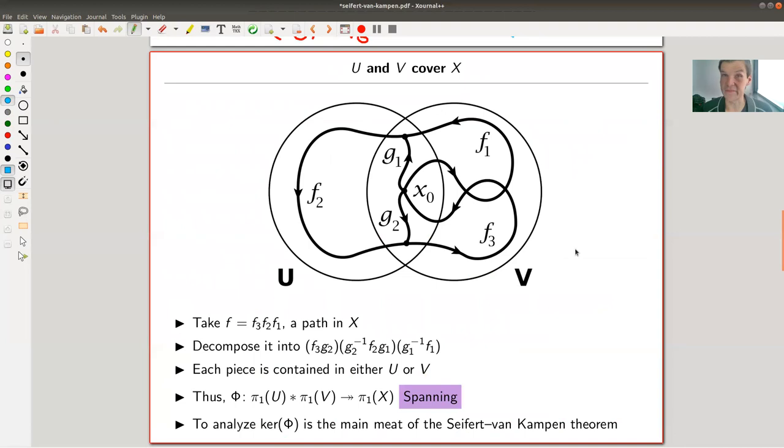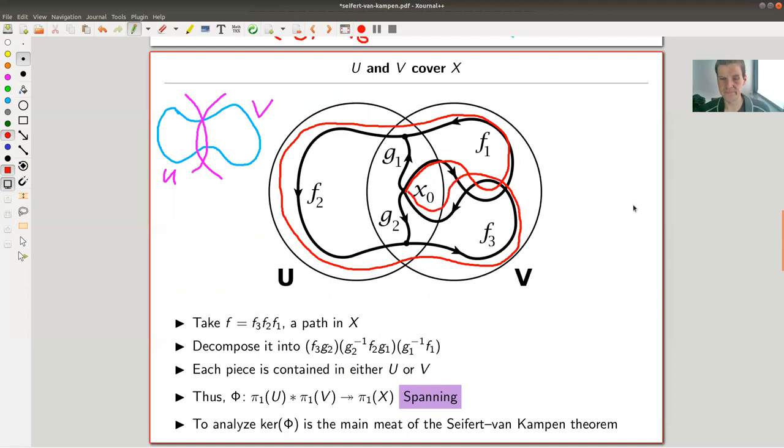That turns out to be the right object to study. We know that U and V cover my space X. My space X is just an illustration, of course, and I cut it like this. I have my piece U here and piece V here and the intersection in the middle. I'm considering a loop. I want to compute the fundamental group so I consider a loop. I start here at my base point and my loop goes all the way along here, and goes back. The loop in the space, it's F, a concatenation of F1, F2, and F3.